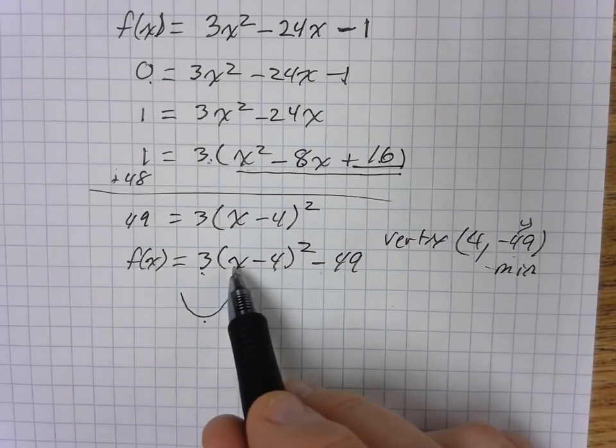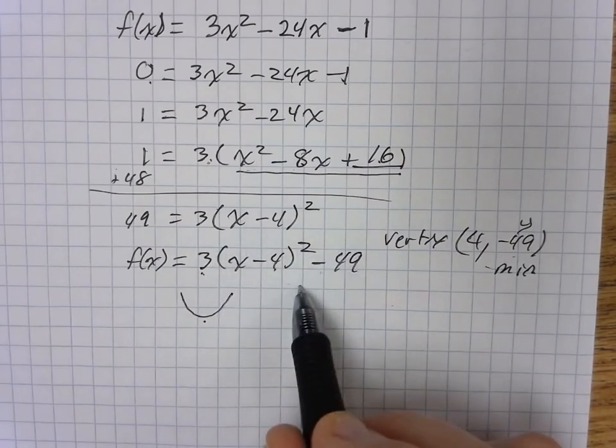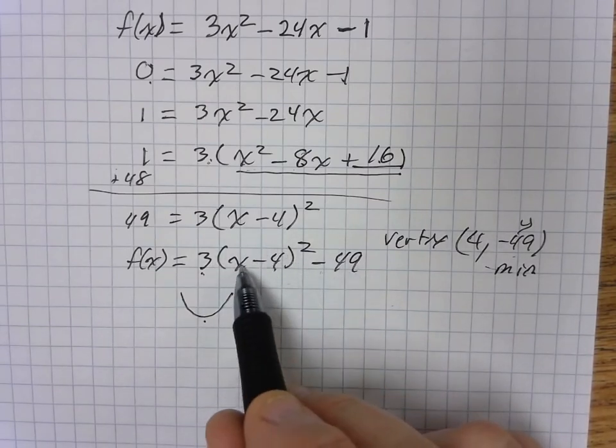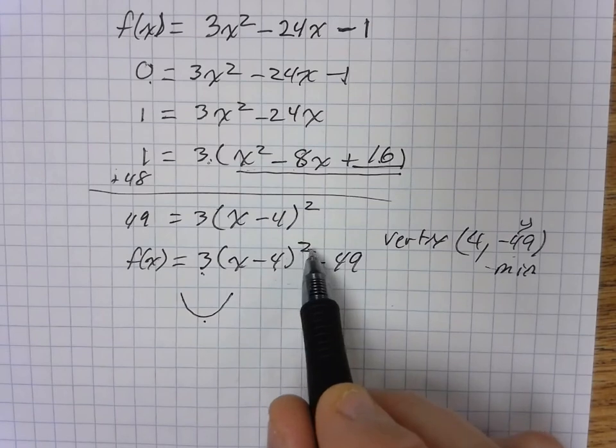You could also go a step further and solve this using square roots now that you've got a square here, a binomial squared, or the x inside of a bigger square.